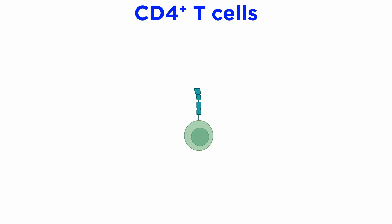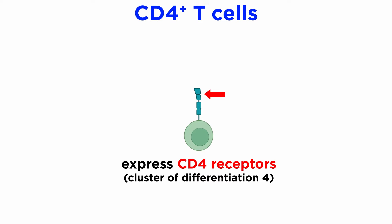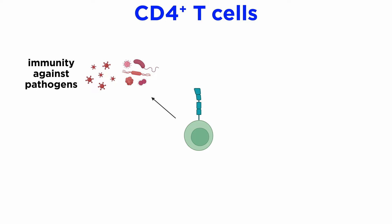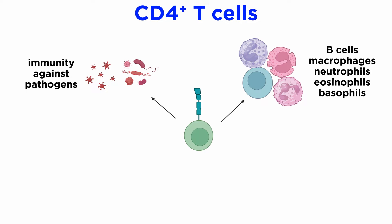CD4-plus T-cells express CD4, or cluster of differentiation 4 receptors, which is a glycoprotein serving as a co-receptor for the T-cell receptor, TCR. These cells play a central role in providing immune protection against pathogens. Their functions include assisting B-cells to produce antibodies, activating macrophages, as well as recruiting neutrophils, eosinophils, and basophils to sites of infection and inflammation.